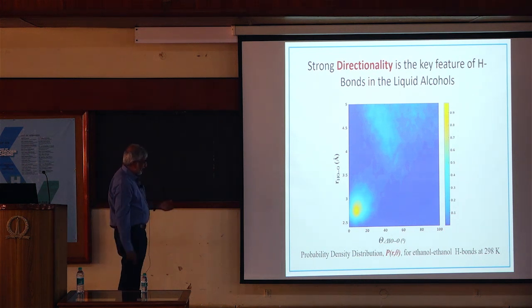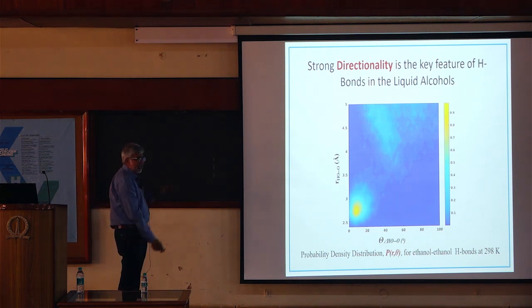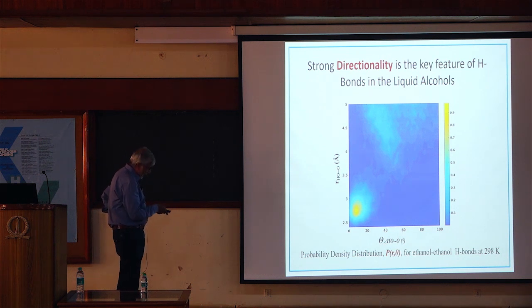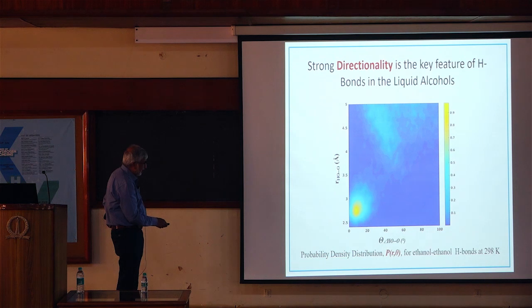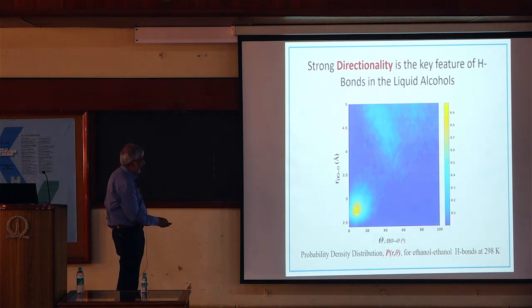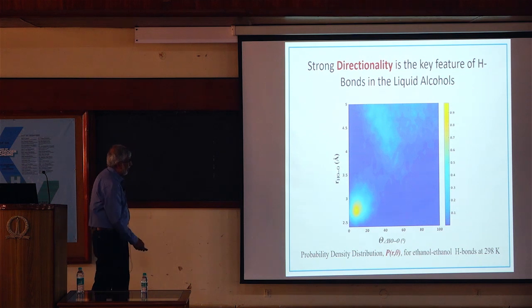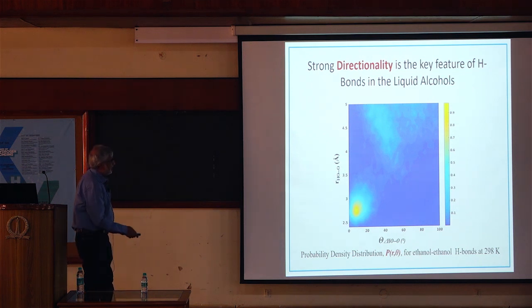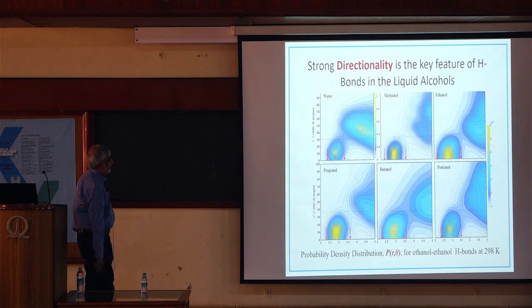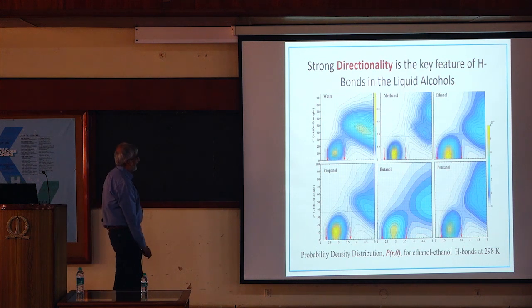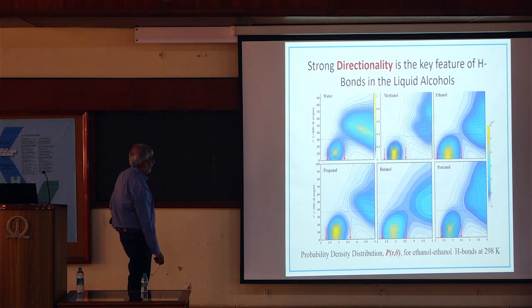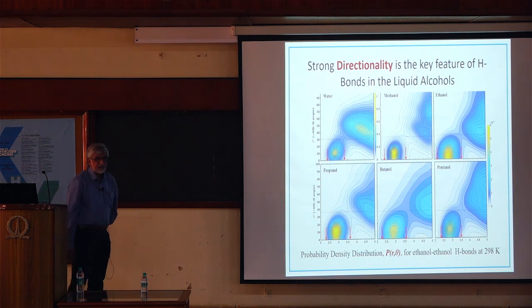Looking at the distance-angular probability distribution — a projection of the scatter plot onto two dimensions — you can clearly see the majority of points lying at short angles and short distances. This is shown here for ethanol, but the same is true for all other molecules studied: methanol, ethanol, propanol, butanol, and pentanol.